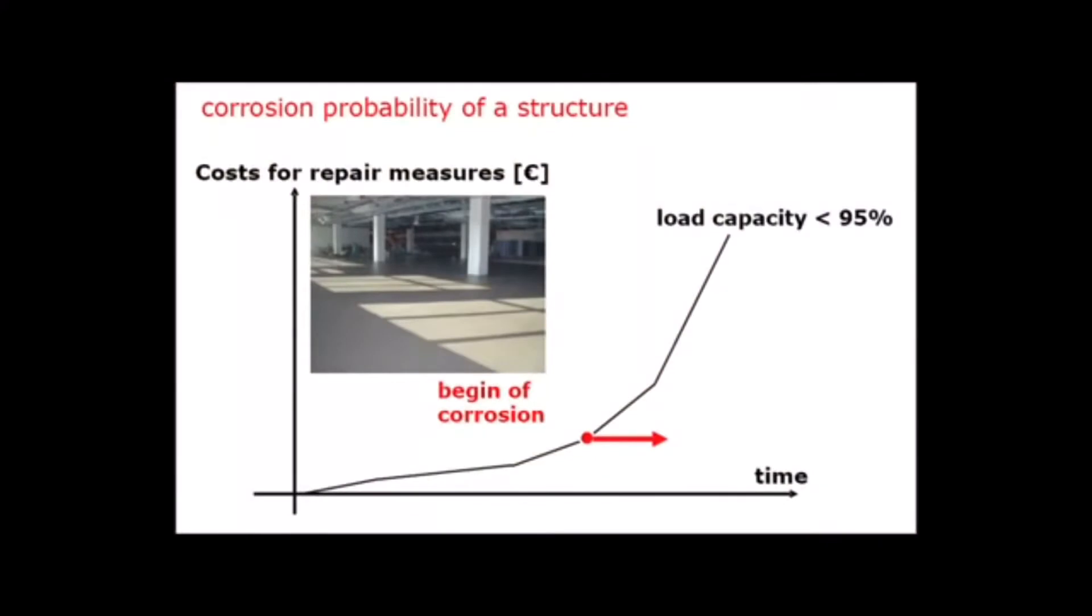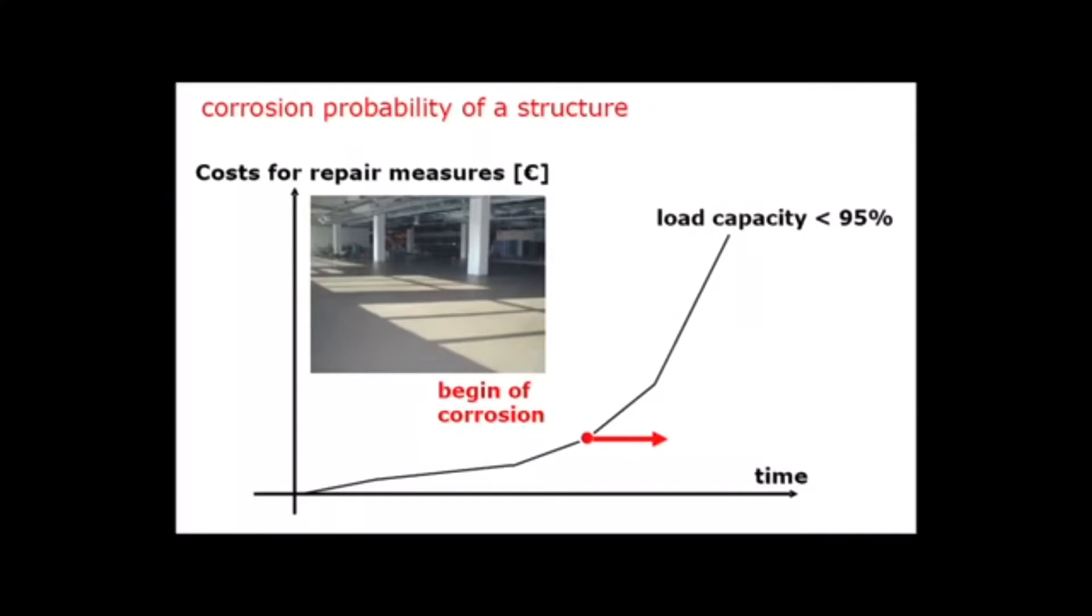The load-bearing capacity of the structure decreases. Under normal conditions, reinforcement steel is protected from corrosion by a thin passive film of hydrated iron oxide.